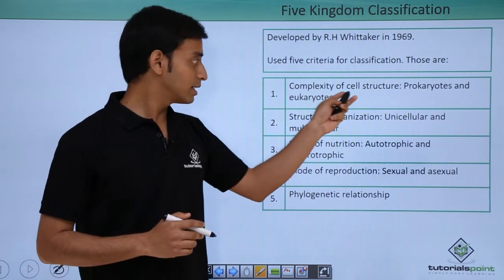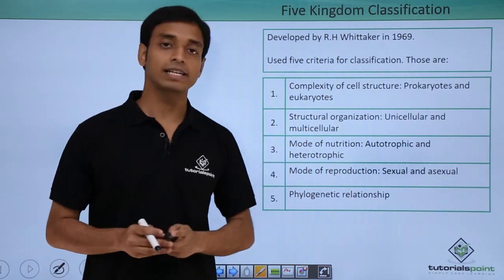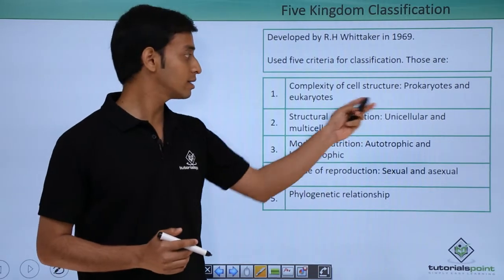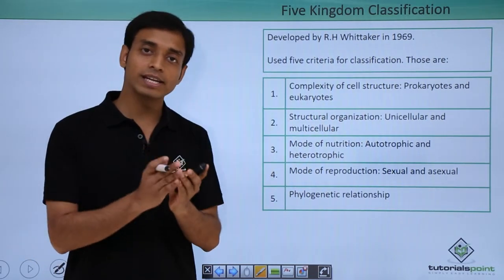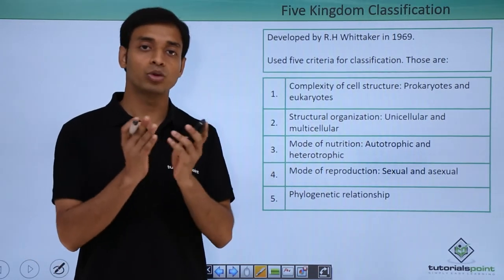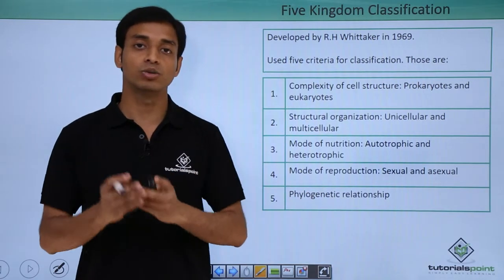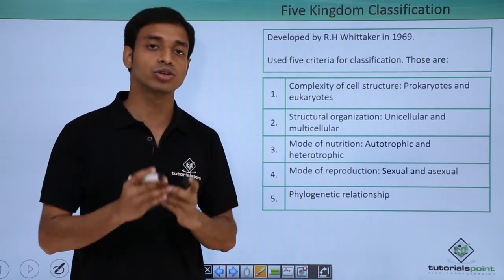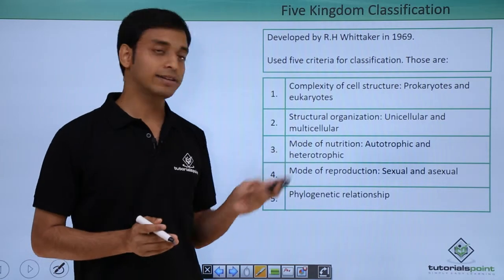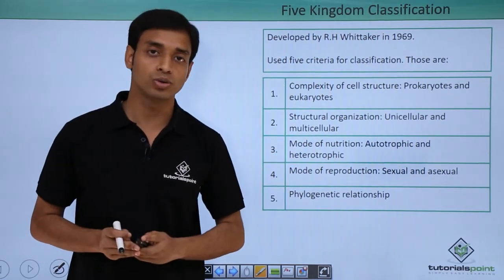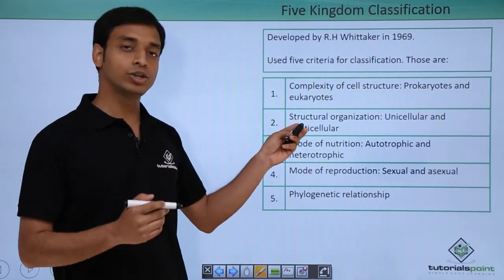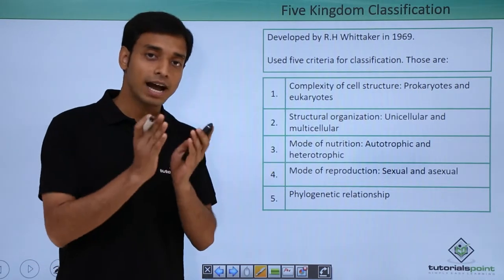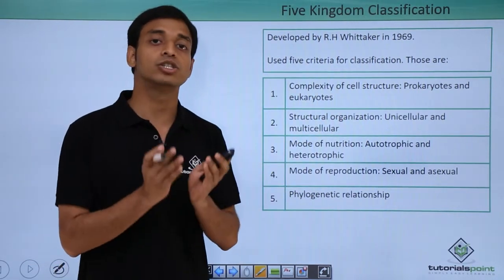The first criterion was the complexity of cell structure. Based on this, organisms are classified into two groups: prokaryotes and eukaryotes. Prokaryotes means primitive nucleus — organisms which do not have a true nucleus — whereas eukaryotes have a true nucleus. The next criterion used was structural organization.